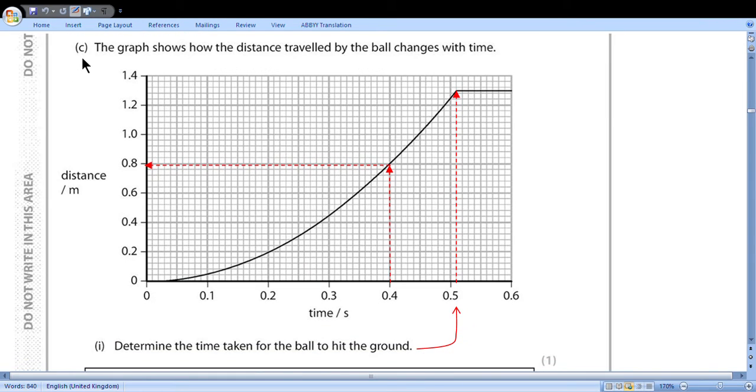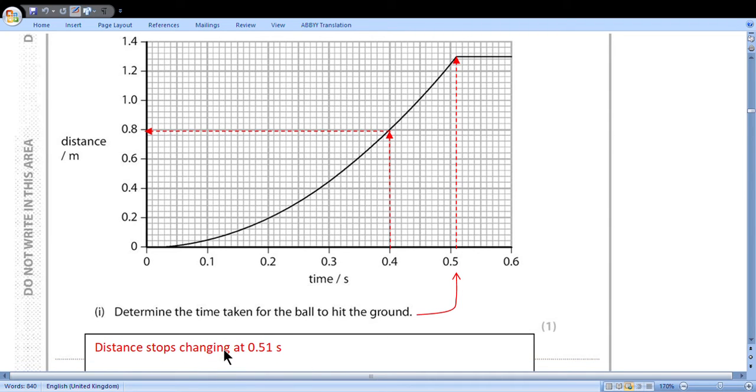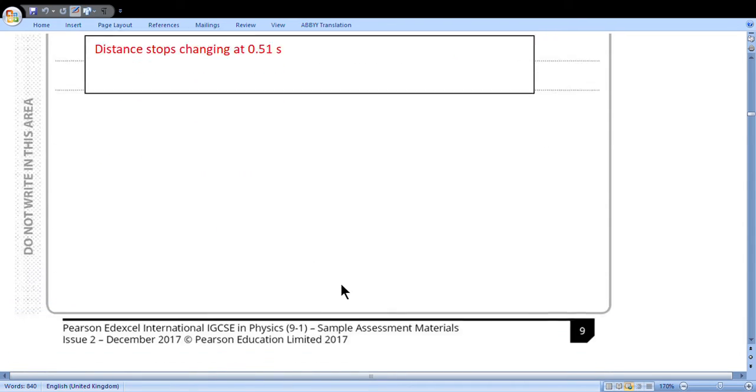The graph shows how the distance traveled by the ball changes with time. Determine the time taken for the ball to hit the ground. So when the horizontal line starts, distance doesn't change so it hits the ground. So it is 0.5 and a small square. Between 0.5 and 0.6 the difference is 0.1 and there are 10 squares. So we divide by 10. The value of small square is 1 hundredth. So we get 0.51 seconds. Distance stops changing at this time.